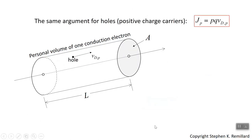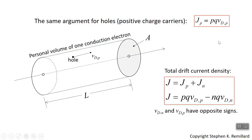For holes, it's not much different. Replace n with p, and you don't need the minus sign because the charge carriers are positively charged. Hole current and hole velocity are in the same direction, so the hole current density is hole concentration times 1.6 times 10 to the minus 19 coulombs times the drift velocity.